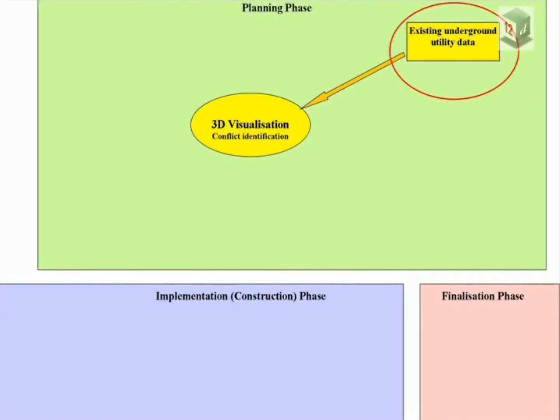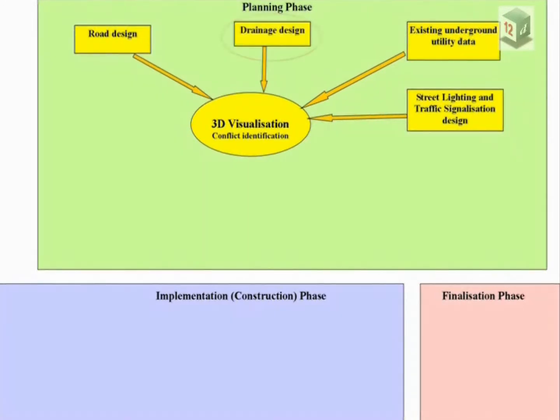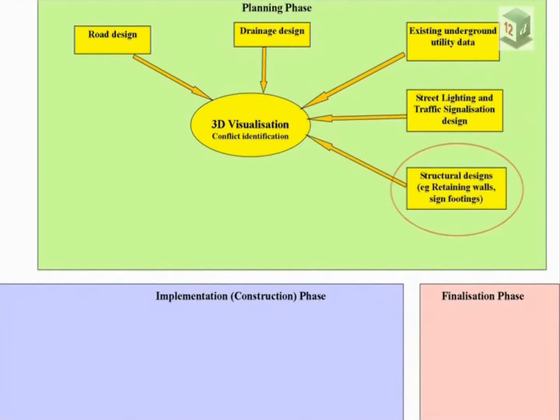In this diagram the first data to be put into 3D visualization is all of the known existing underground public utility plant. The next data set is the tin design surface created from the road design. Following that is all street lighting and traffic signalization pole footings, associated pits and conduits. Next is all the drainage design including pipes, manholes, gully boxes and so on. Any structural components that penetrate into the ground such as retaining wall footings and large sign footings are also included. Gold Coast Water are now providing geometrically designed water and sewer mains and these are also included.